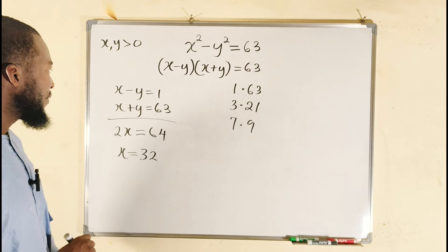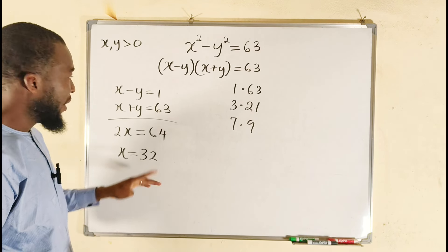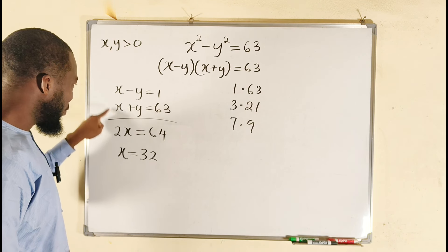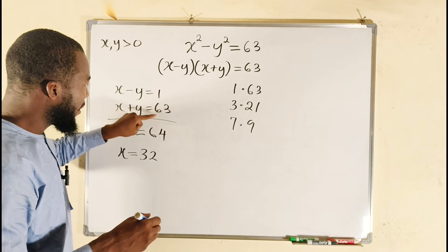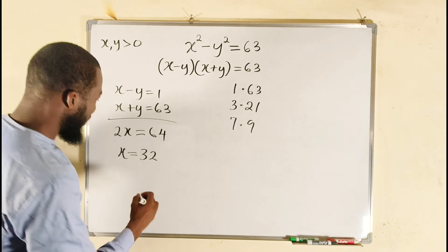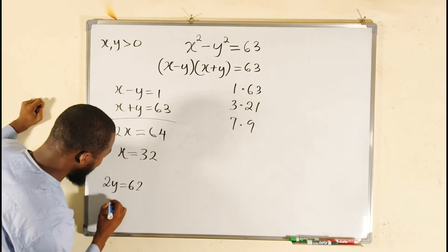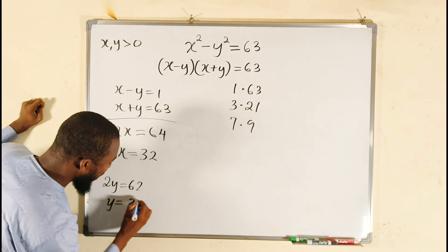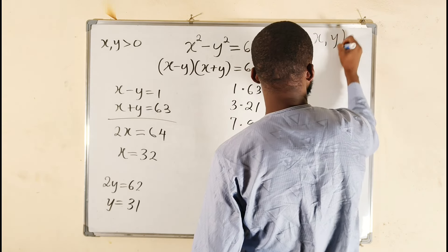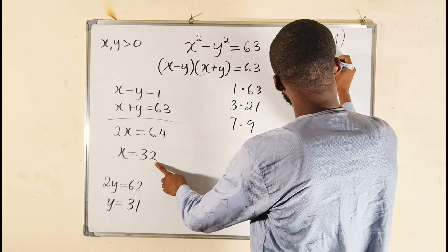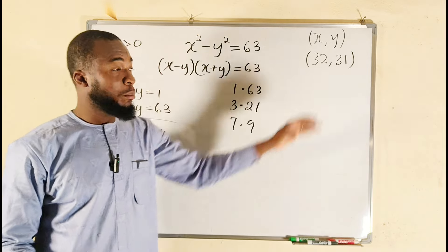Now for the value of y: subtracting the first equation from the second gives x minus x equals 0, and y minus negative y equals 2y, so 2y equals 62, which means y equals 31. So our first pair of solutions is x equals 32 and y equals 31.